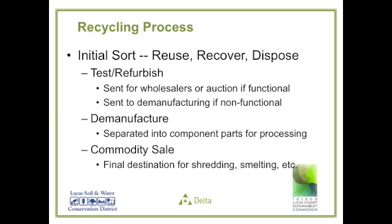In the demanufacturing process, materials are separated into component parts. For instance, a desktop computer would have the circuit boards removed, the RAM chips removed, the power supply removed, any drives removed, and finally the aluminum case and plastic outside casing — all sent to different downstreams for subsequent processing. The commodity sale is the final destination for materials that have been collected for shredding, smelting, or other downstream processing.